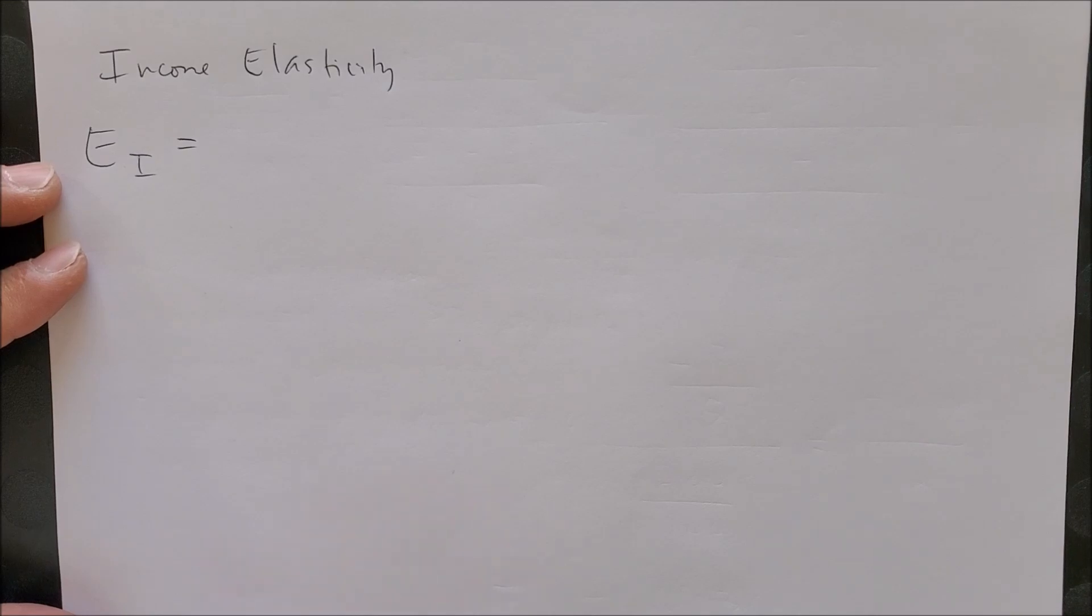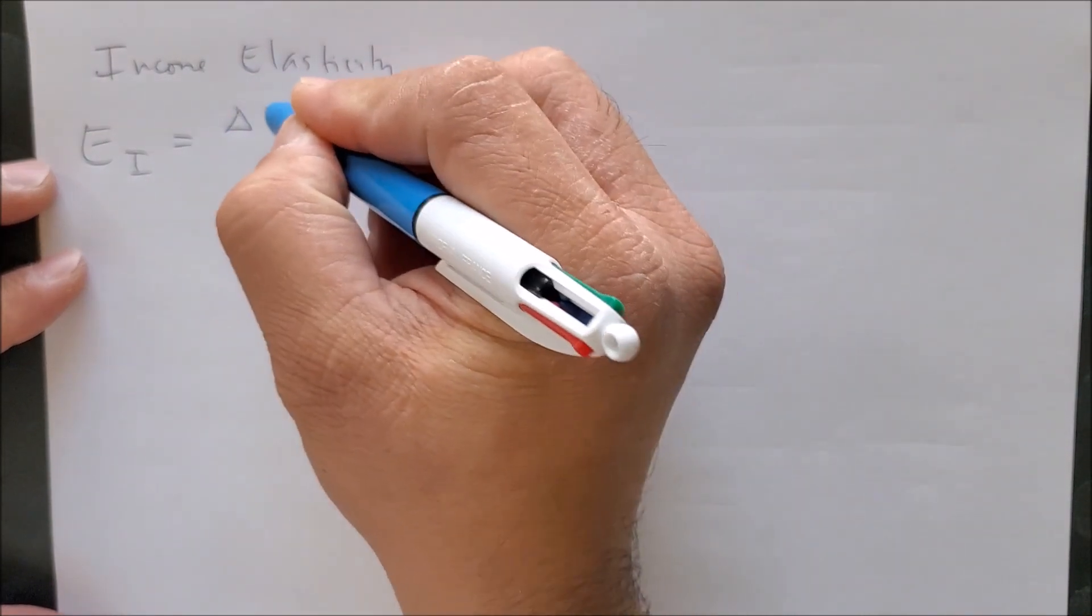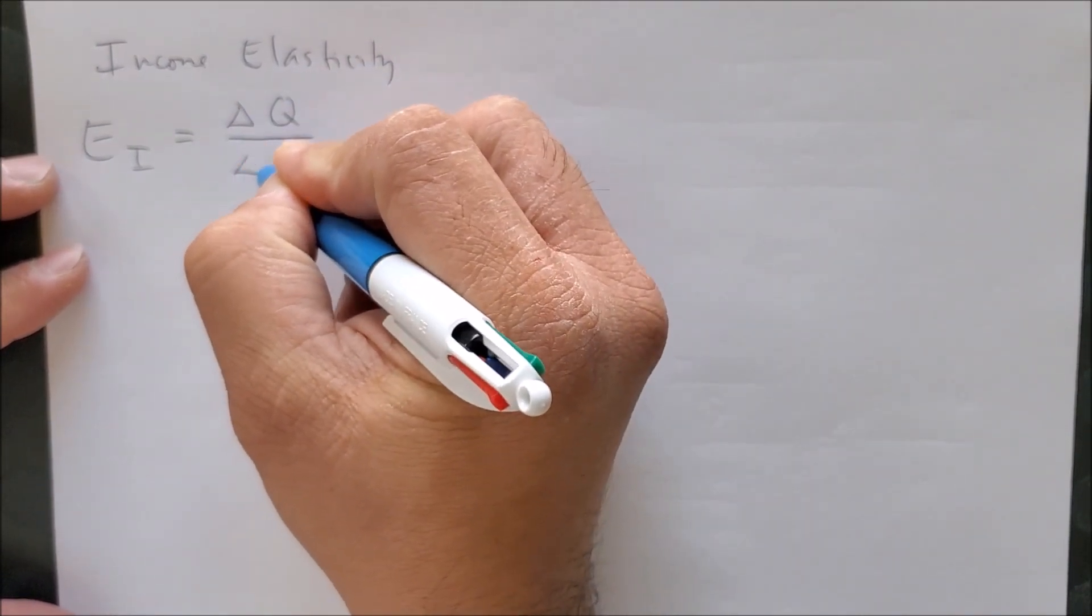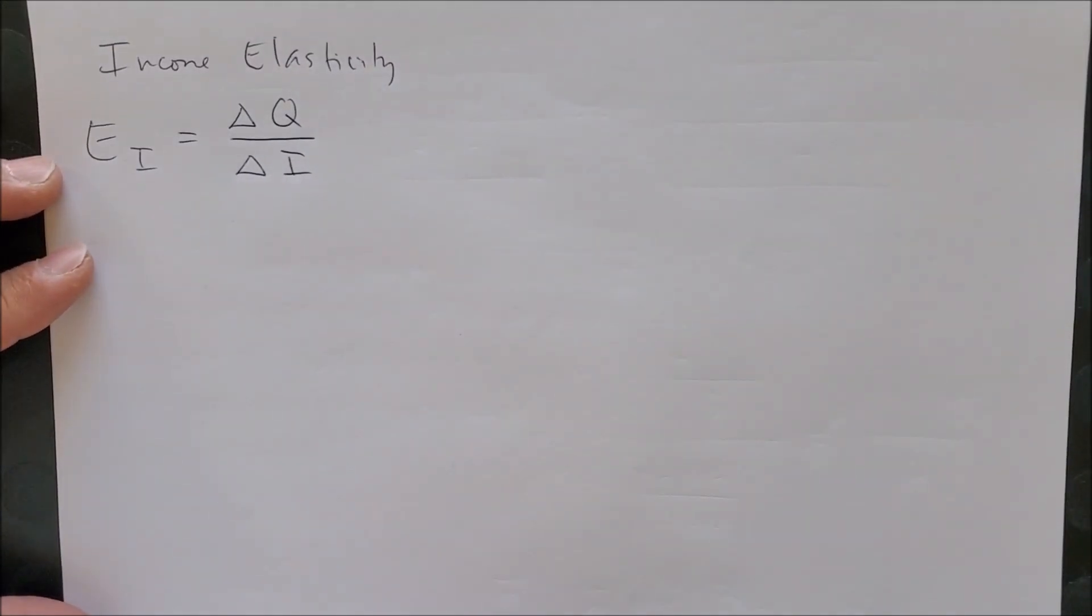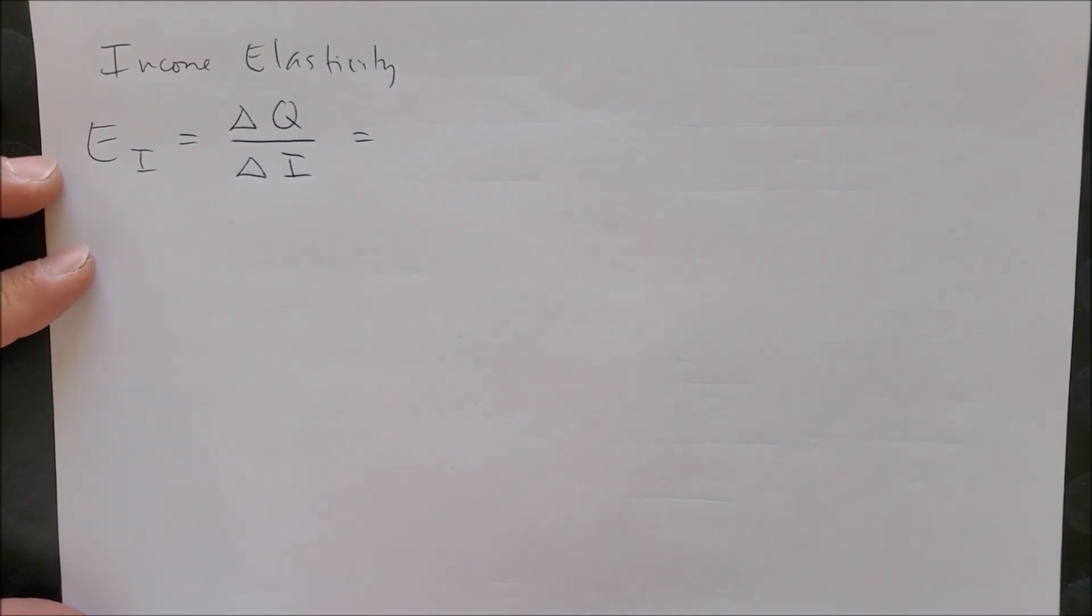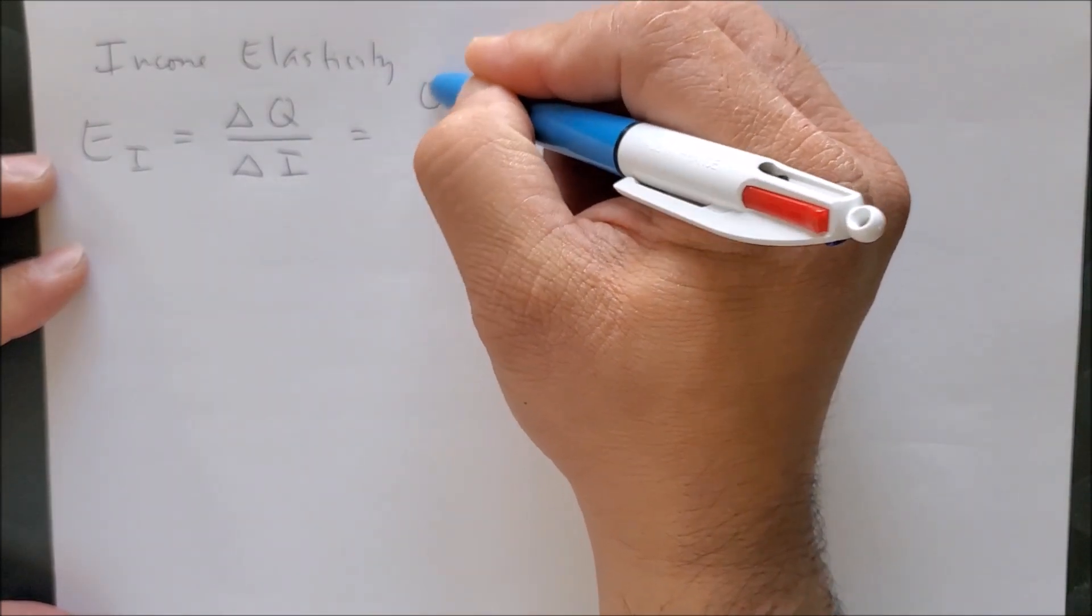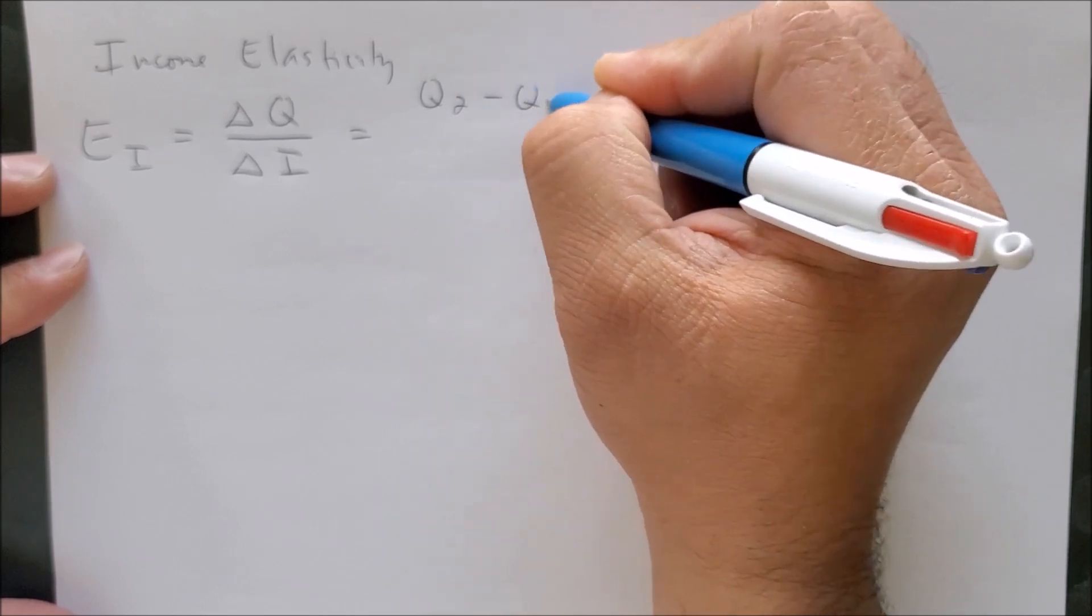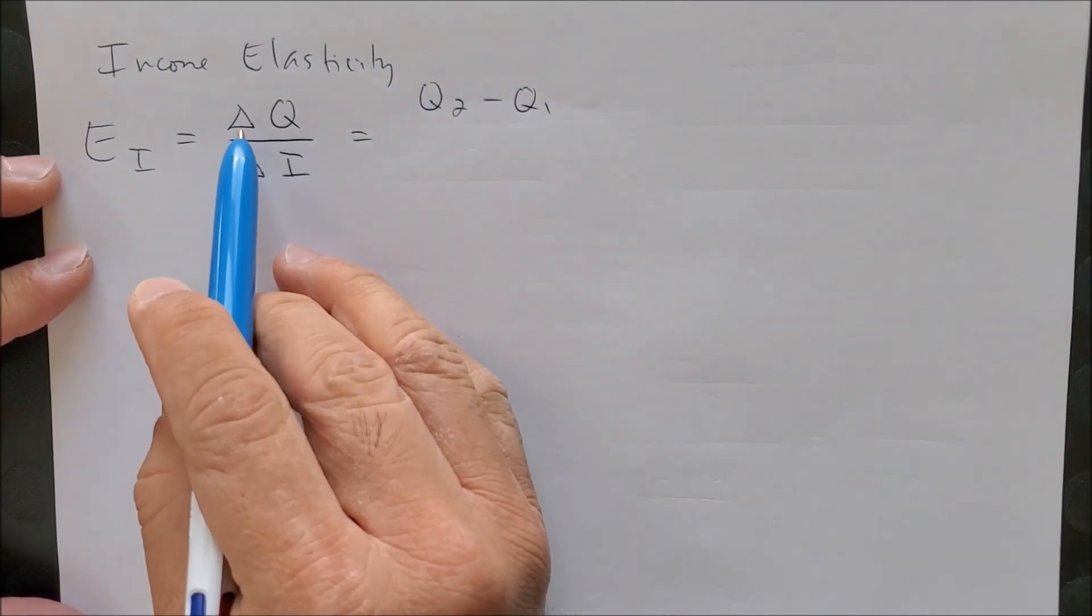But since now we don't have numbers in percent format, we are going to use the equation: the change in quantity over the change in income. Now this change in quantity is further explained by looking at the change based on the delta of what we call new minus old over the old quantity.